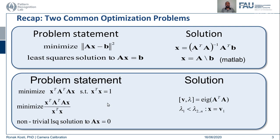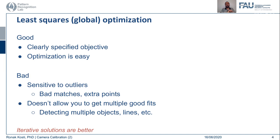Another problem statement we saw is of the form AX equals zero. It has a constraint where X-transpose X equals one, and essentially what we do is minimize this term. The solution is simple eigenvalue decomposition of A-transpose-A, where we take the minimum eigenvalue and its corresponding eigenvector as the final solution. Both total least squares and linear least squares are called global optimization methods. They are easy to implement, easy to understand, and optimization is quite straightforward with just two equations to solve.